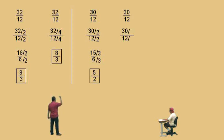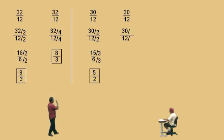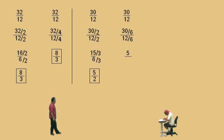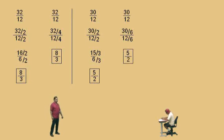Notice, we divided by two, and then divided by three. Charlie, what's two times three? Six. So that's telling us we could have done this in one step by dividing top and the bottom by six. What's thirty divided by six? Five, because five times six is thirty. What's twelve divided by six, Charlie? Two, because two times six is twelve. There we go, in one step.